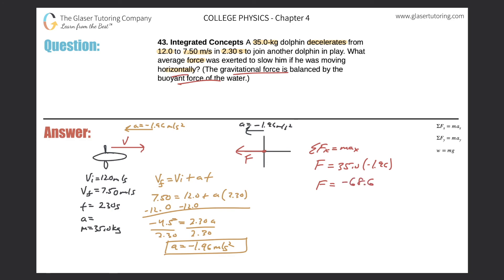Negative 68.6, and that is in newtons. So that would be the force that needs to be exerted in order to slow the dolphin down from 12 meters per second to 7.5. You could probably even give the answer as a positive value.